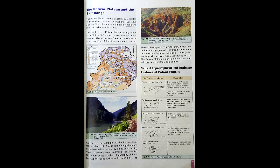So we start our lesson. Students, what is the location of this area? The Potohar plateau and the salt range are located to the south of Islamabad, between the river Indus and the river Jhelum.